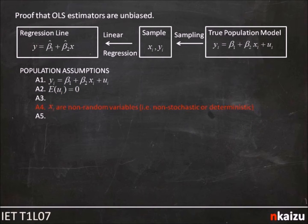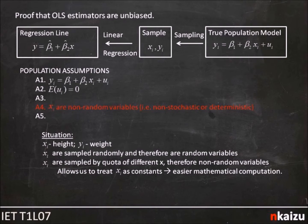The final assumption we'll need for today's proofs is that X_i are non-random variables. This is sometimes written as X_i are non-stochastic or deterministic. To see what we mean by this, consider an example. We have two variables, our favorite two variables, with X being height and Y weight. Presumably, this linear relationship is increasing as taller people weigh more.